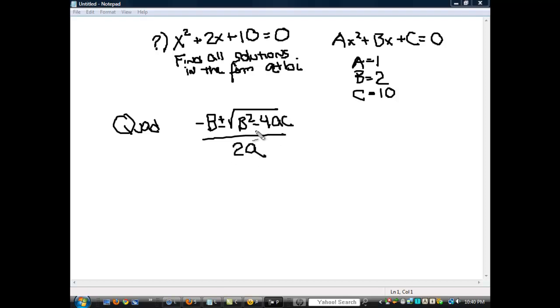So let's plug in what this is. We've got b equals 2, so negative 2 plus or minus the square root of 2² minus 4 times 1 times 10, all over 2 times 1.